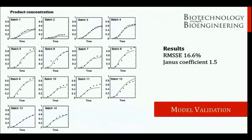The results for the product concentration are shown where we have a root mean sum of squared error of 16.6% and a Janus coefficient of 1.5. This shows that the relative errors in the calibration set and the validation set are of a similar magnitude. We therefore feel we have a well calibrated model and a good fit to the experimental data.